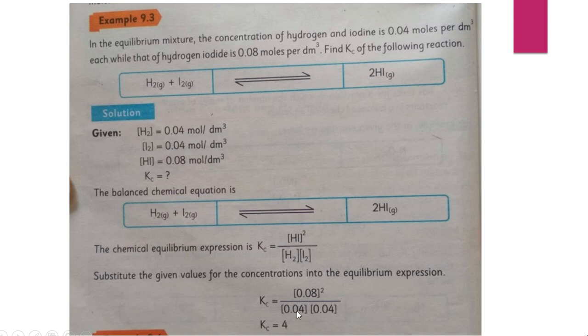So by putting the value of HI and H2, I2, you have to take power of it and multiply them both and then divide. So you will get the answer and that is 4. So you get the value of Kc.